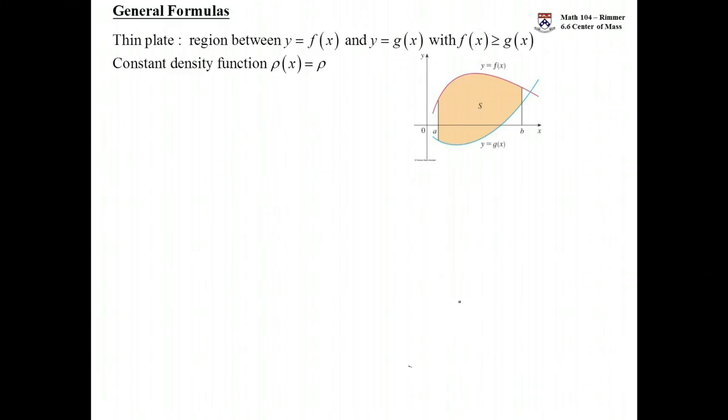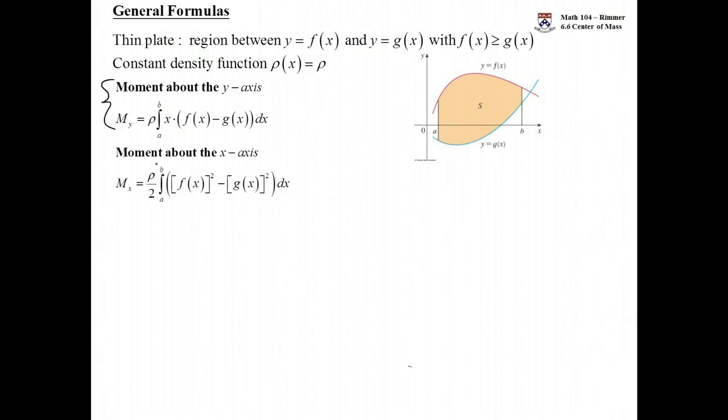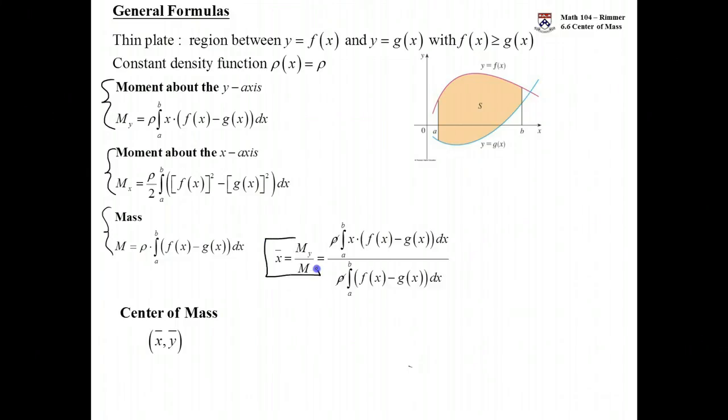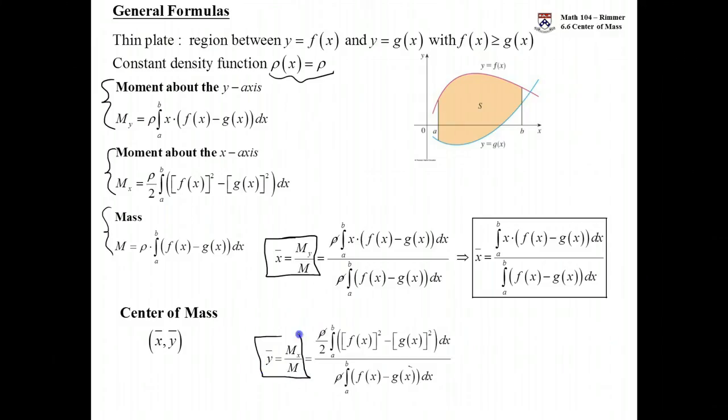Thin plate, f more than g, for the entirety of a to b, constant density function rho. We have the moment about the y-axis, factoring out the rho. We have the moment about the x-axis, factoring out the rho over 2, and then we have the total mass, factoring out the rho again. And x-bar and y-bar are found by taking the moment about the y divided by the total mass, and the rho ends up canceling out. When you have a constant density, it ends up not playing a role in your formula. Y-bar would be the x-moment divided by the mass. And the rho's cancel out again in here, but we have this half that came and played a role. These will be your formulas if you're trying to find the center of mass of a plate, a thin plate, where you have an f of x that's always above a g of x.